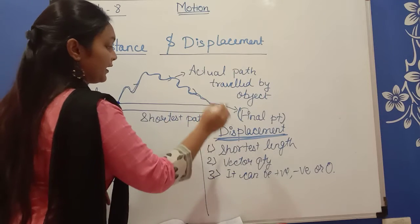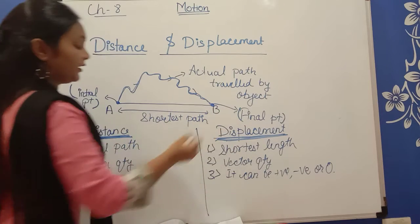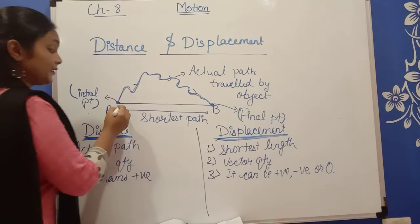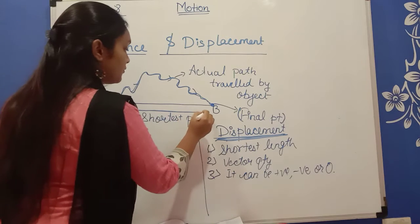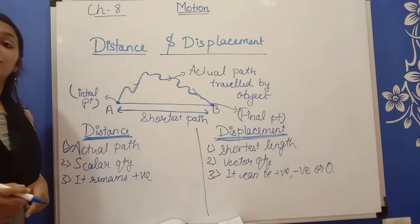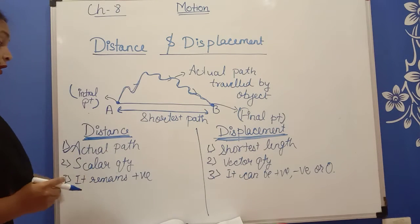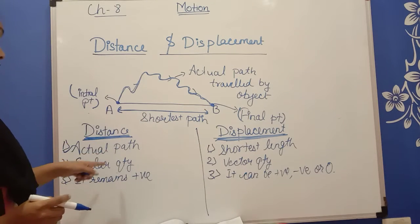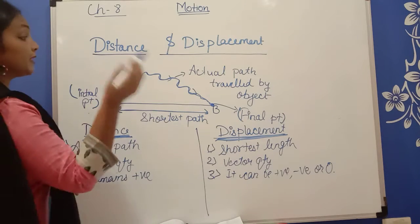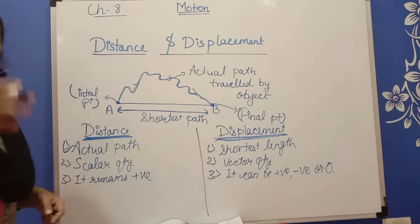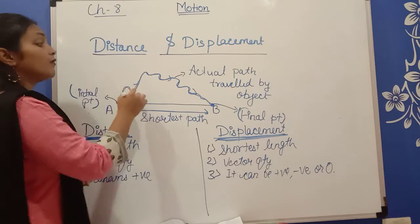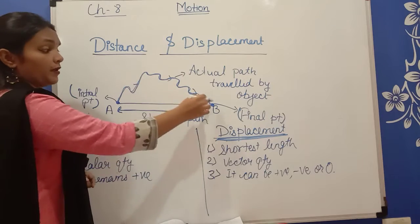Now, if we talk about displacement — displacement is the shortest path followed by the object. We call it displacement. Distance is the scalar quantity. Why? Because we don't know exactly the direction we are going; we go randomly and reach.